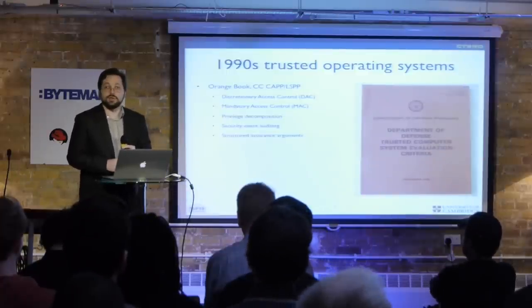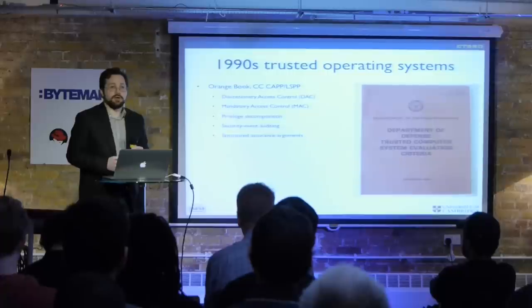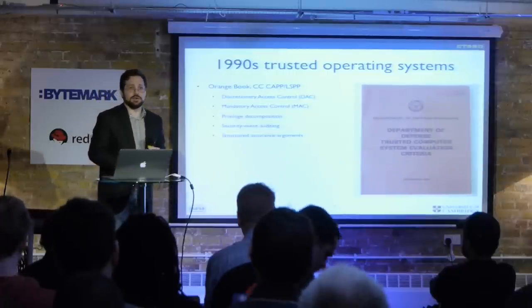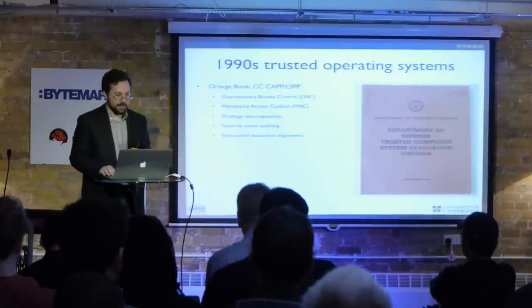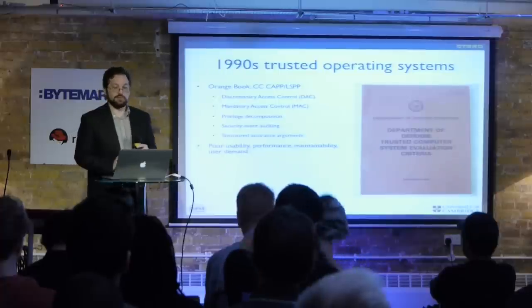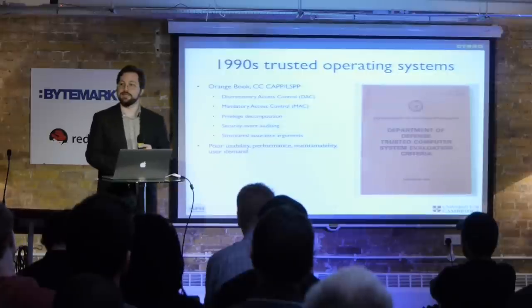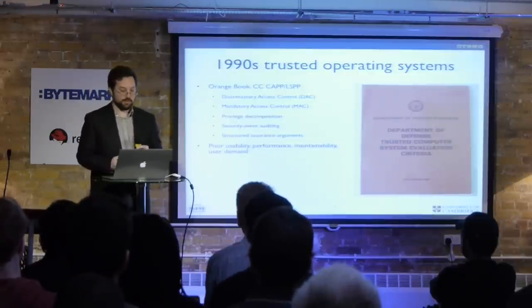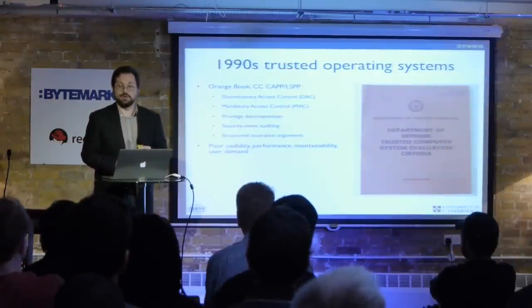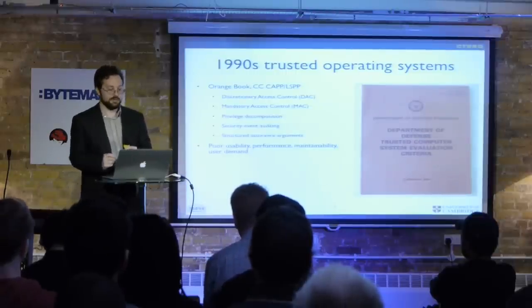They also thought about assurance arguments — how you build your system so you can argue it's secure. But what do we know about these trusted operating systems? They were really hard to use, slow, impossible to maintain, and nobody wanted them. The US government said they would only buy systems with this stuff; all the vendors ran around and did it, spending a lot of money. Then the US government said maybe next year, and that continued for several years until everyone got bored and went home.